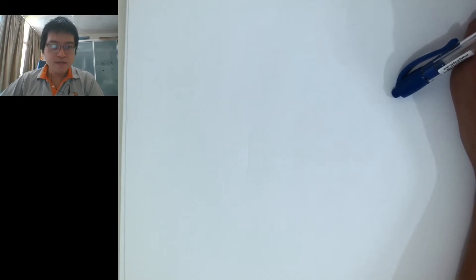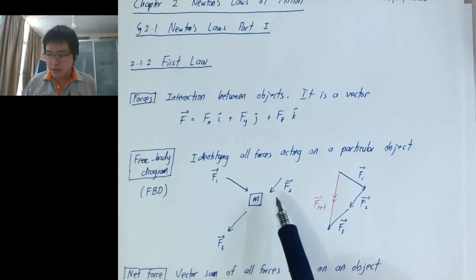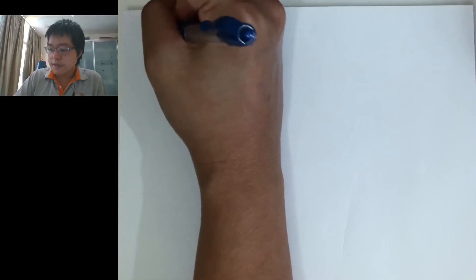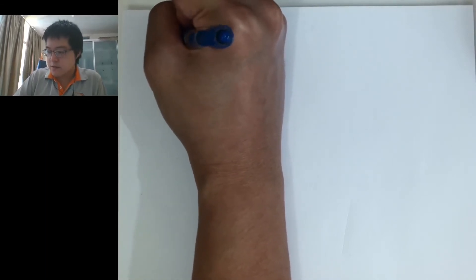Let me introduce some basic types of force that we will deal with quite often. Every time you want to draw a free body diagram, you need to know the force — its direction and magnitude. Every time we learn a new type of force, we should learn how to determine its magnitude and direction. I will try to do this in a careful method, because sometimes misconceptions arise if we don't get everything correct.